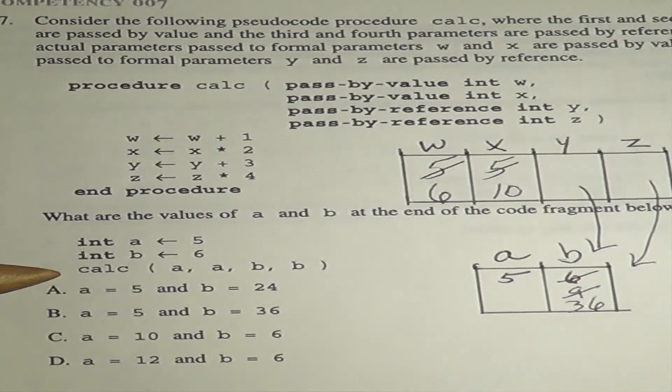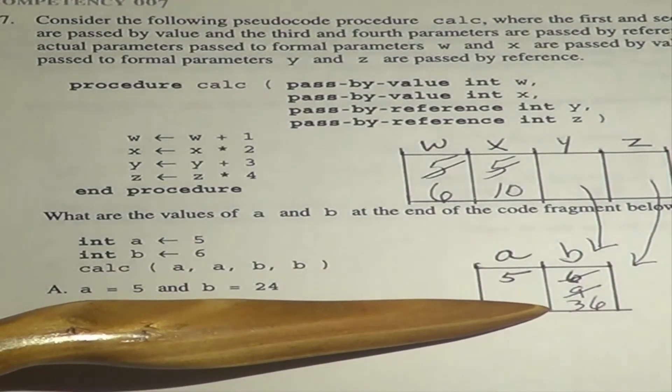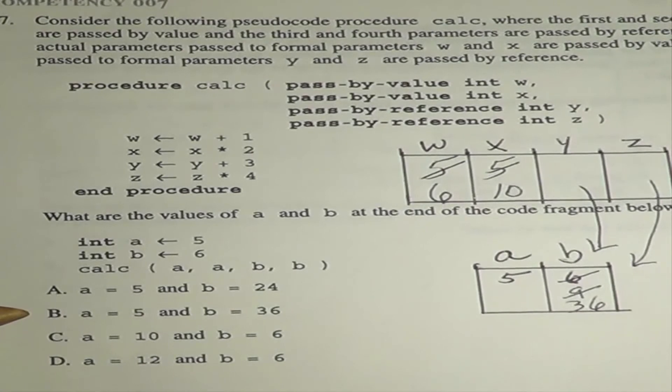So, when we finish the execution of this method CALC, the final values are 5 and 36, which is choice B.